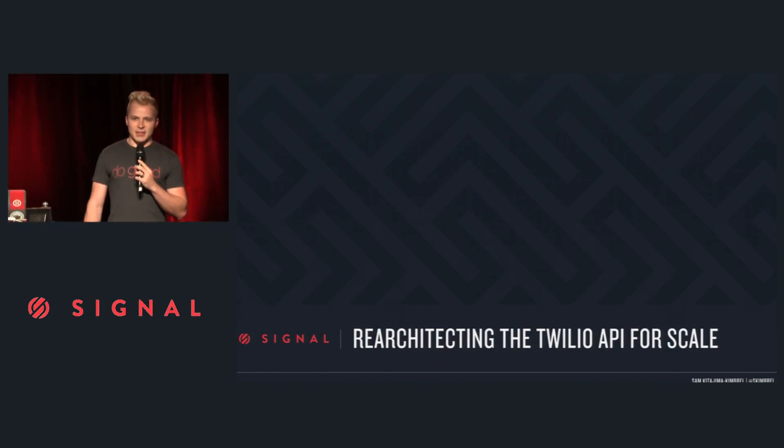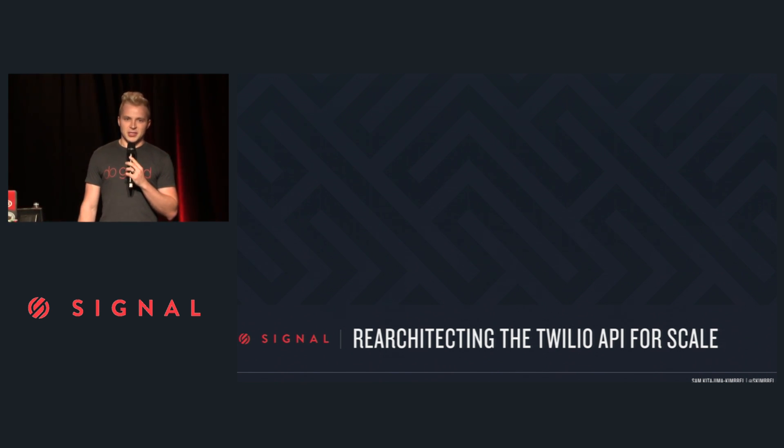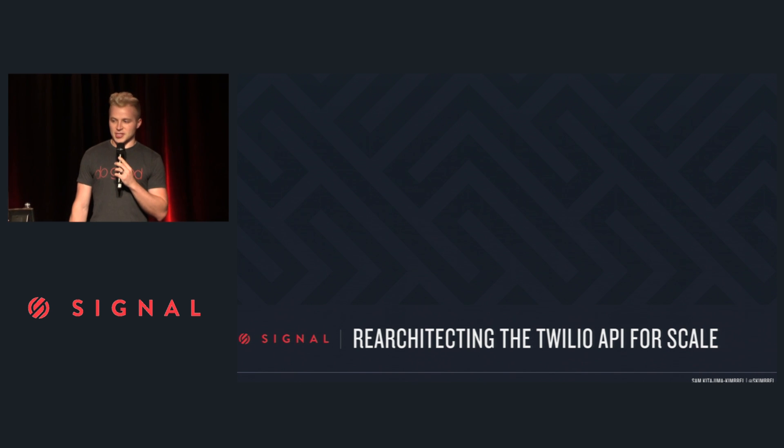Sometimes, more so in the past than today, we haven't lived up to our own expectations or yours. For example, the Twilio API in 2013 had 99.5% uptime. And as Jeff said, there are some companies out there who might say, hey, two nines, that's great. That's not us. We aren't happy with that. What I'm here to talk to you about today is the history of the API and the deep architectural changes we've made to make the API more reliable than ever before, because every communication counts.